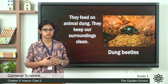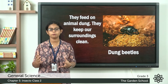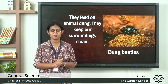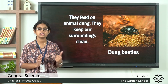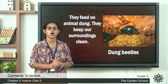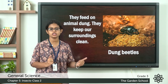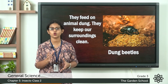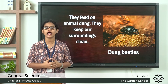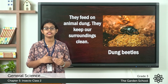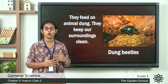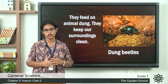The next type of insect is the dung beetle. What do they feed on? They feed on animal dung, and they even help keep the surroundings clean. These dung beetles are also called rollers because they roll the animal dung and then feed on it. That is why they are called rollers.